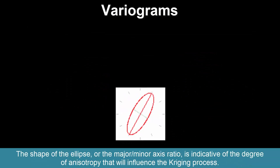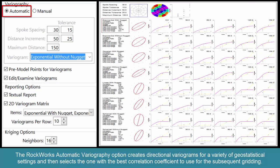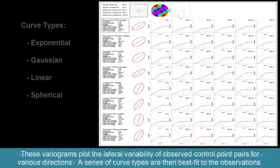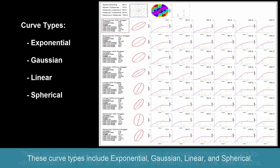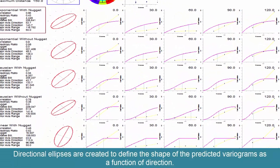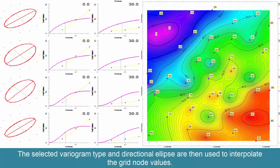The shape of the ellipse, or the major-minor axis ratio, is indicative of the degree of anisotropy that will influence the kriging process. In practice, the Rockworks automatic variography option creates directional variograms for a variety of geostatistical settings and then selects the one with the best correlation coefficient for the subsequent gridding. These variograms plot the lateral variability of observed control point pairs for various directions. A series of curve types are then best fit to the observations, including exponential, Gaussian, linear, and spherical. Directional ellipses are created to define the shape of the predicted variograms as a function of direction, then used to interpolate the grid node values.